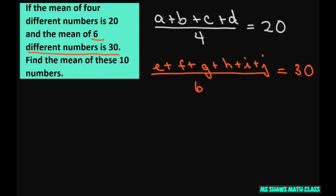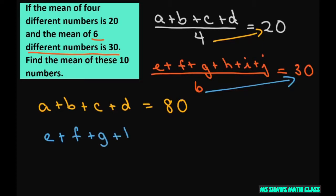Alright, so now what I'm going to do is just get the total of the numbers. So if I cross multiply, I get that A plus B plus C plus D equals 80. And I get E plus, I'm going to cross multiply here, plus F plus G plus H plus I plus J equals 180.